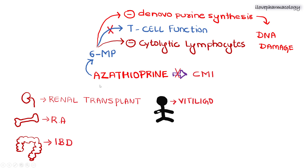First, let us see azathioprine. Azathioprine will inhibit the cell-mediated immune responses. Azathioprine will be metabolized to form an active metabolite, that is 6-mercaptopurine. This 6-mercaptopurine will inhibit the de novo purine synthesis, thereby causing DNA damage. In addition, 6-mercaptopurine will also inhibit T-cell function and cytolytic lymphocyte activity.